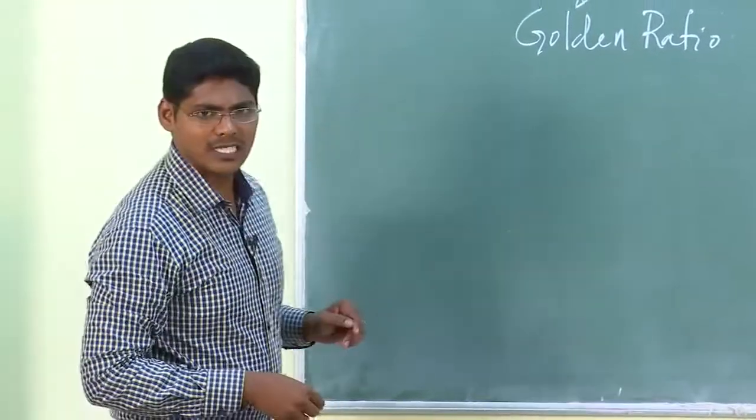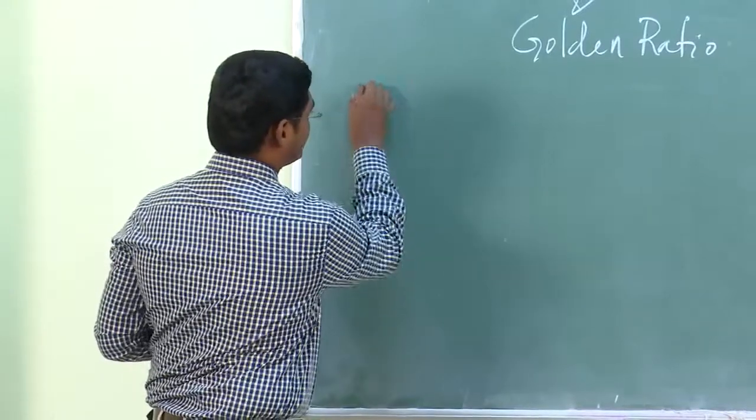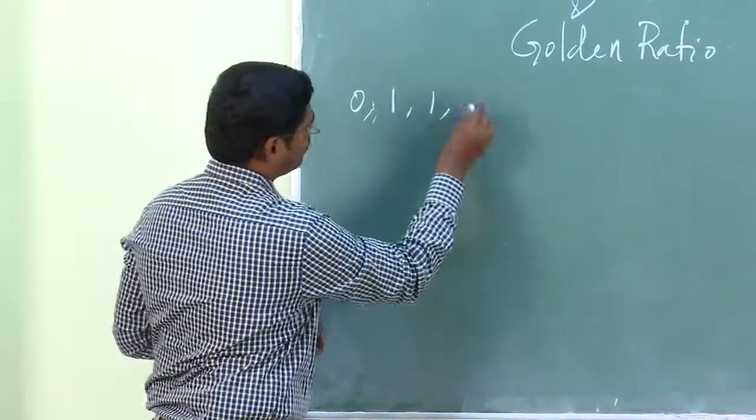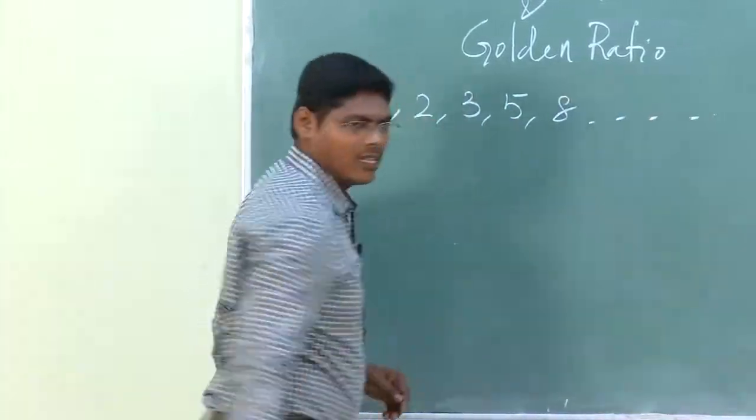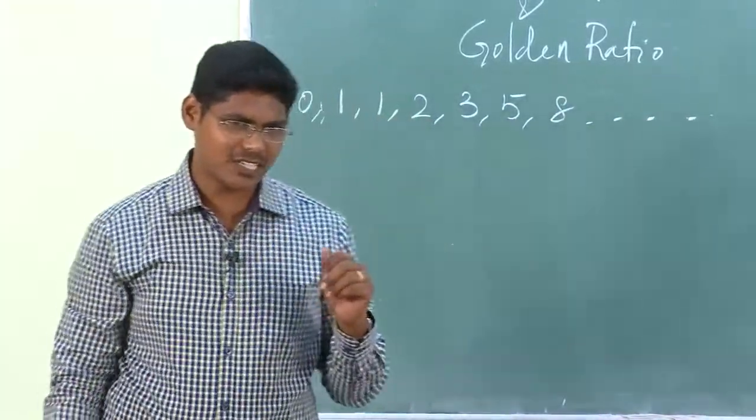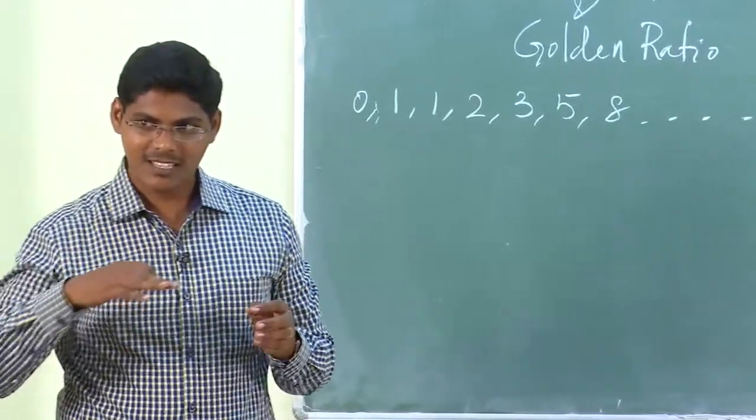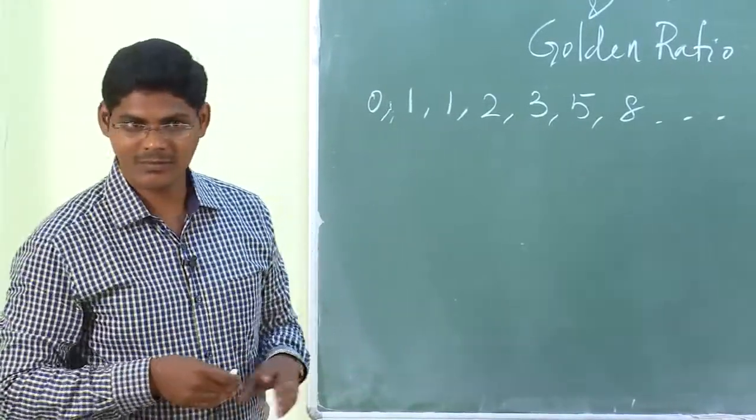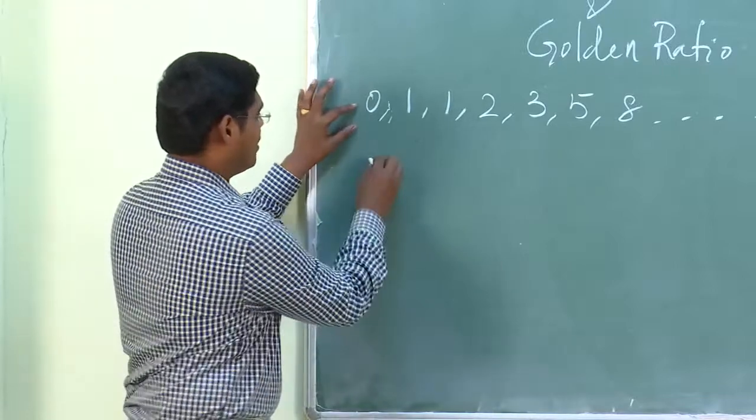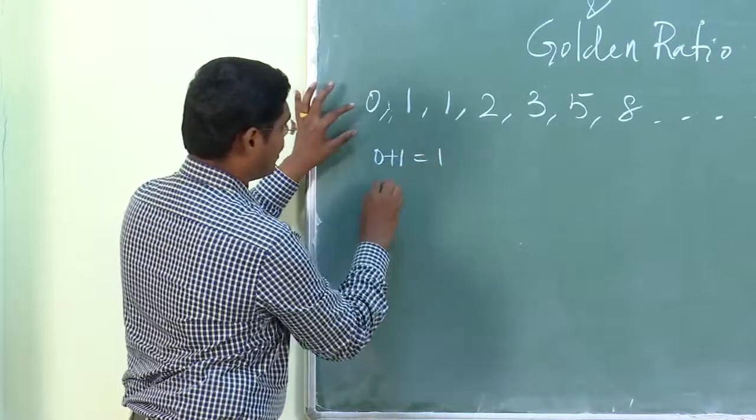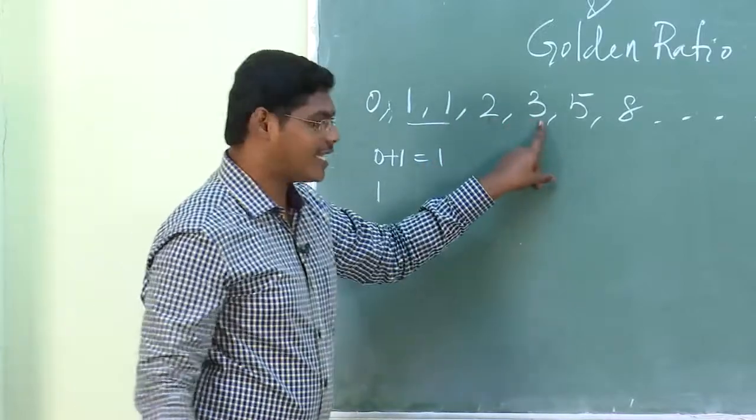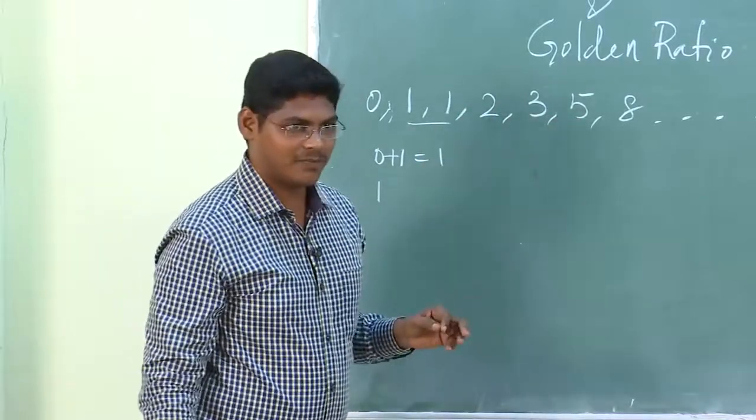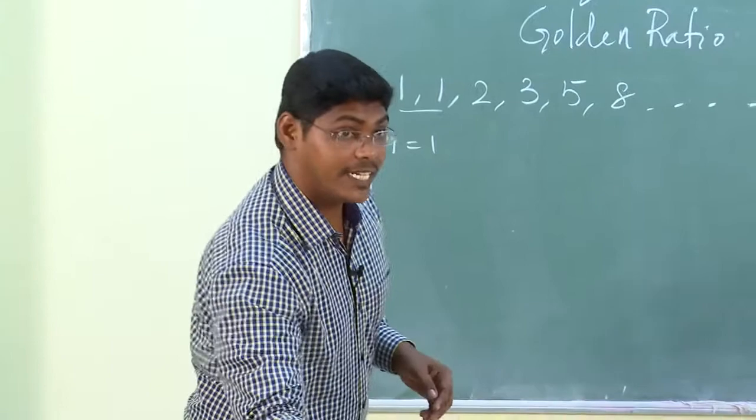So what is meant by Fibonacci sequence? It starts from 0, 1, 1, 2, 3, 5, 8. Is there any relation in the sequence of numbers? Adding. Yeah, 0 plus 1 you have 1, again 1 plus 1 you have 2, 1 plus 2 you have 3, 2 plus 3 you have 5. So this is the beauty in the sequence.